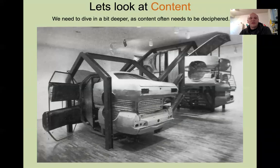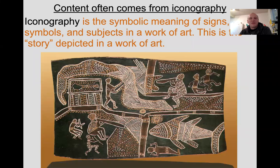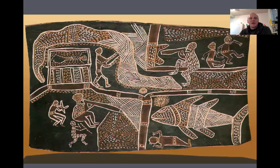Let's dive into content a little bit. How do we start to decipher the content of a work of art? It often comes from iconography — the symbolic meaning of signs and symbols and subjects in a work of art, the story depicted. And often we've got to know the cultural context to decipher that iconography. This is an Aboriginal Australian piece with symbols and signs we may not be able to interpret unless we know that culture.